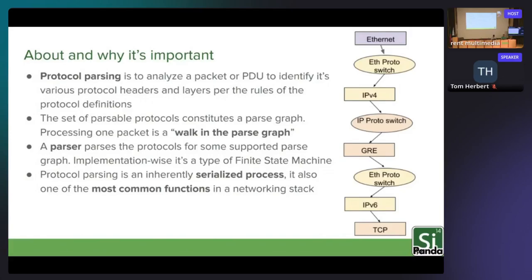Implementation-wise, you can think of this as a finite state machine. Protocol parsing's main issue or impediment is that it is a serialized process. It's very difficult to process protocol headers of any complexity because of the requirement that they have to be processed one at a time — it's been very difficult to parallelize. But it's also one of the most common functions in the networking stack, so there's a lot of motivation to optimize this both in hardware and in software.